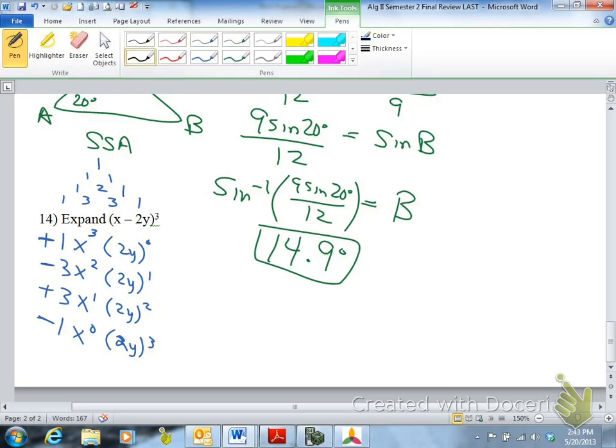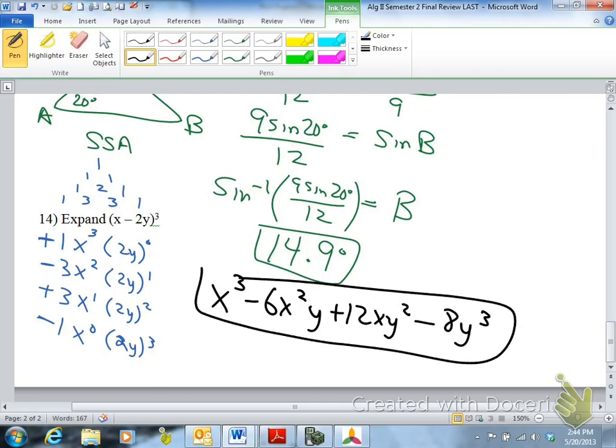So our answer would be x cubed. Negative 3 times 2 is 6. Negative 6x squared y. 2 to the 2 is 4. 4 times 3 is 12. Plus 12xy squared. And that's a 1, that's a 1. This is 8y cubed. And that would be your final answer.